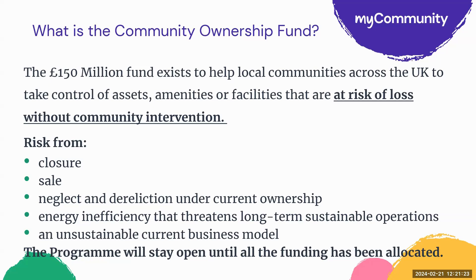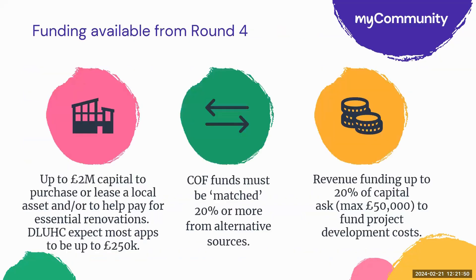The asset that you're saving must have had current or past community use and/or have community significance. Incorporated voluntary and community organisations and parish, town and community councils are eligible to apply if you can show that you can buy the asset freehold, obtain a long-term leasehold of at least 15 years, or alternatively you might already own the asset that is at risk. Groups can apply for up to £2 million capital funding to purchase or lease a local asset and/or to help pay for essential renovations. DLUC expect most applications to be in the region of £250,000. Applicants must have matched funding of 20% or more from alternative funding sources. Groups can also apply for revenue funding up to 20% of their capital ask with a maximum of £50,000, which can help fund development costs and running costs in the first 12 months.